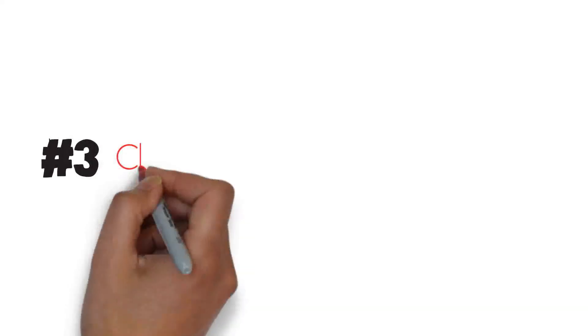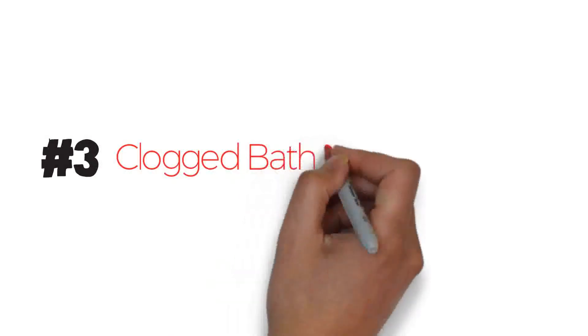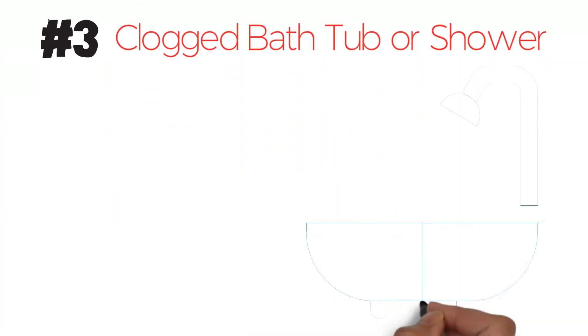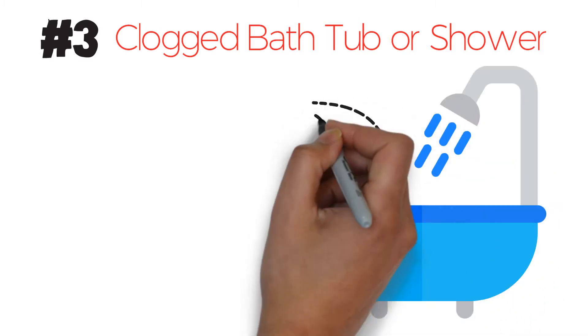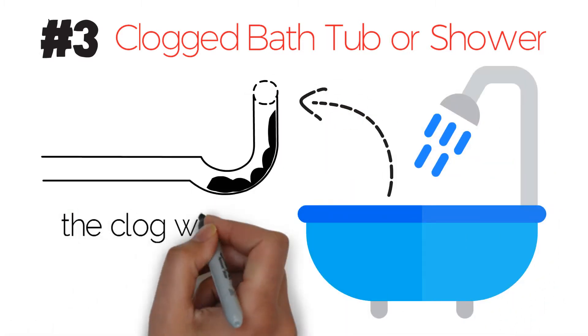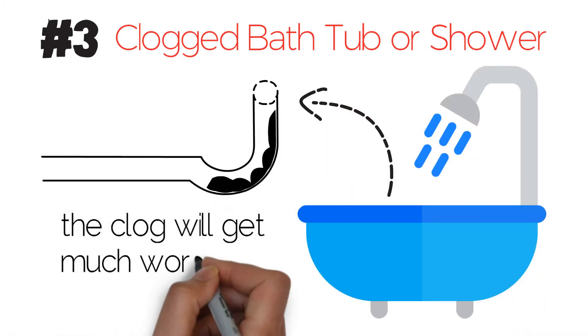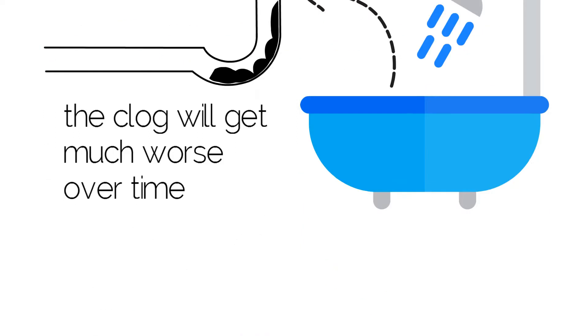3. Clogged Bathtub or Shower. The biggest problem with clogs that occur in bathtub and shower drains is that if it is not dealt with, the clog will get much worse over time.